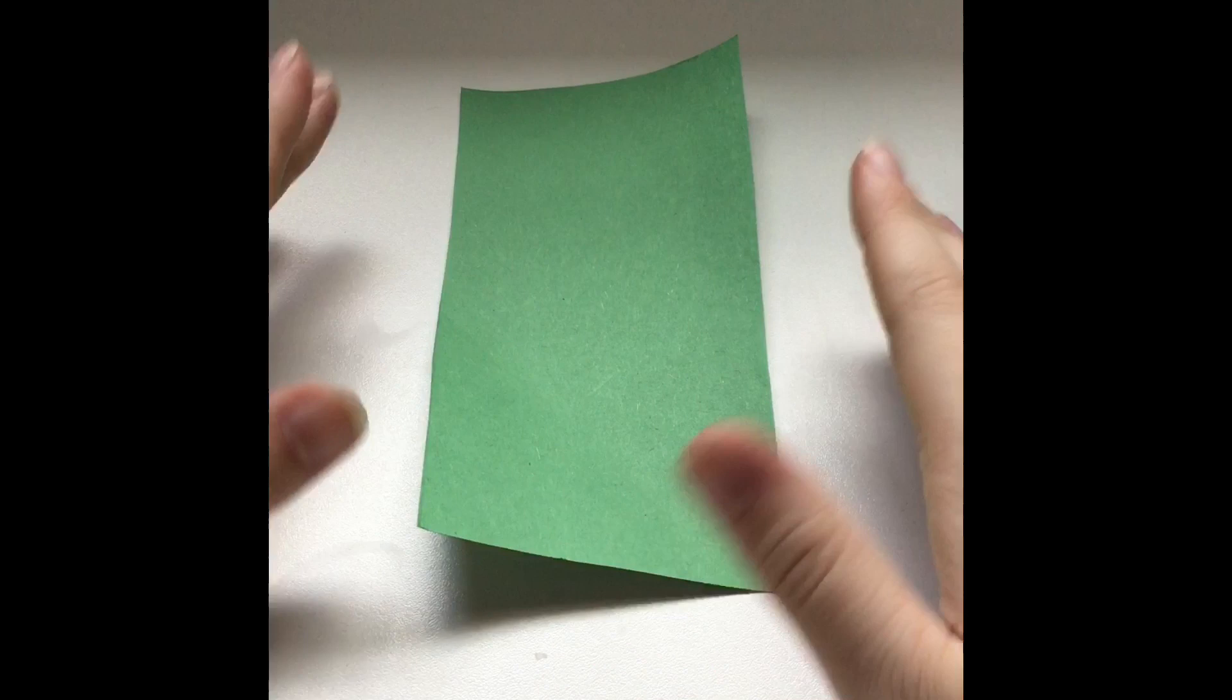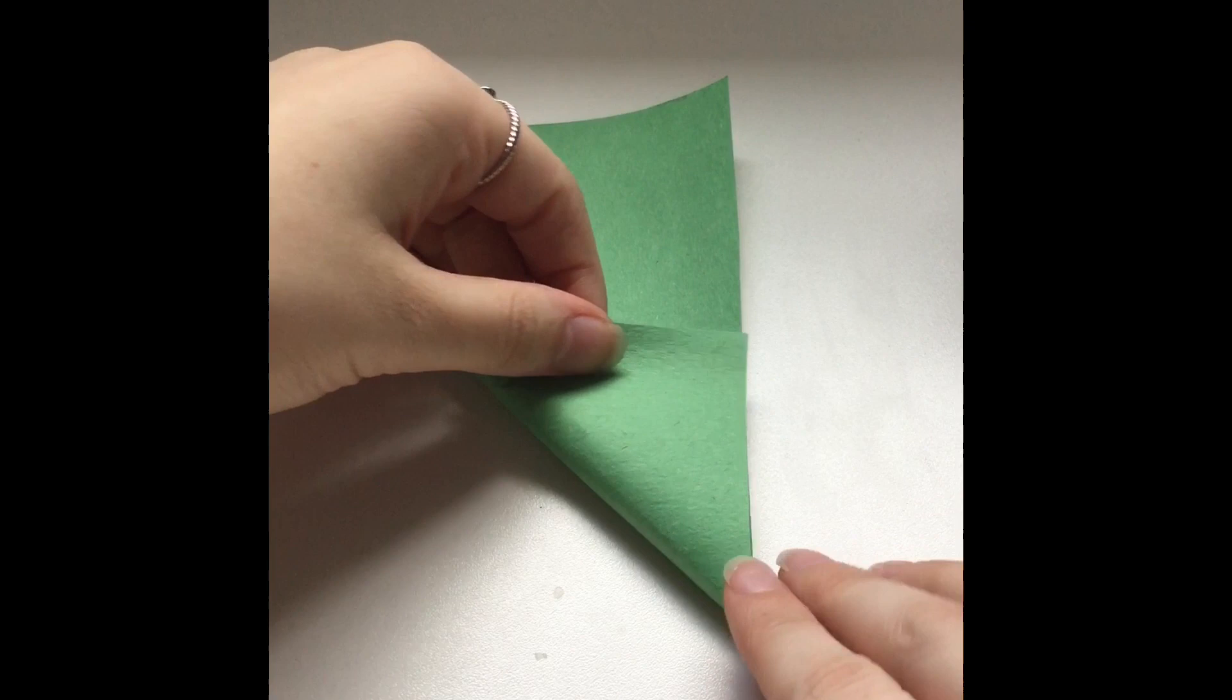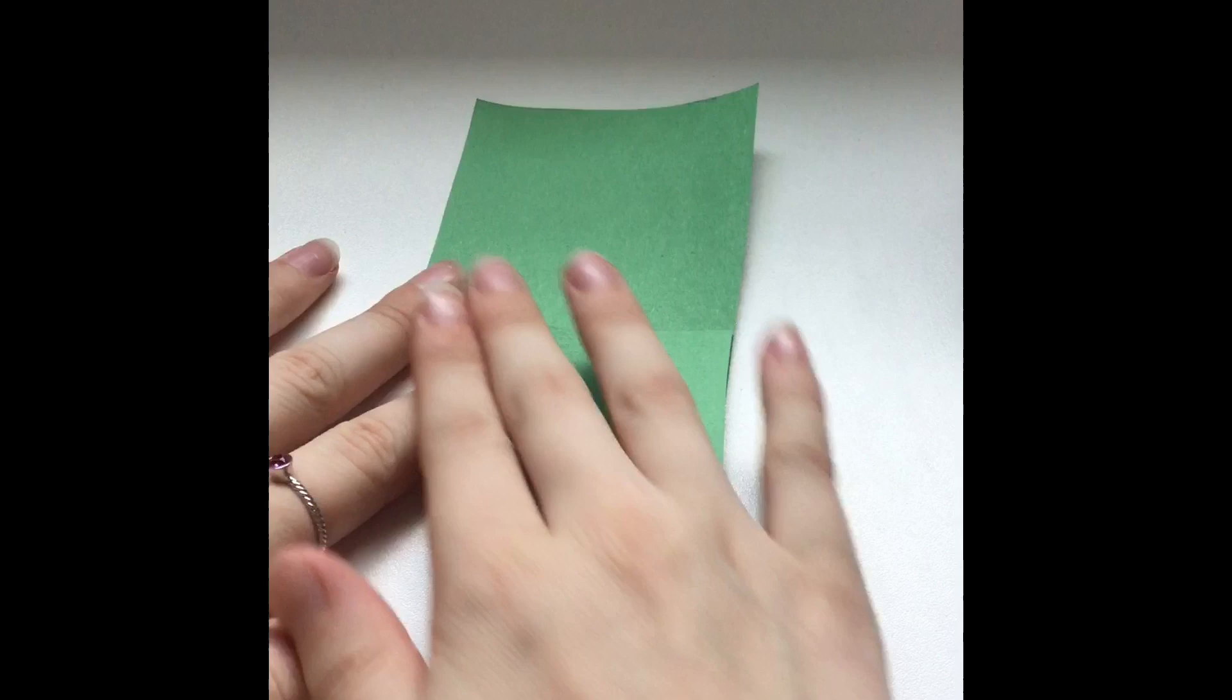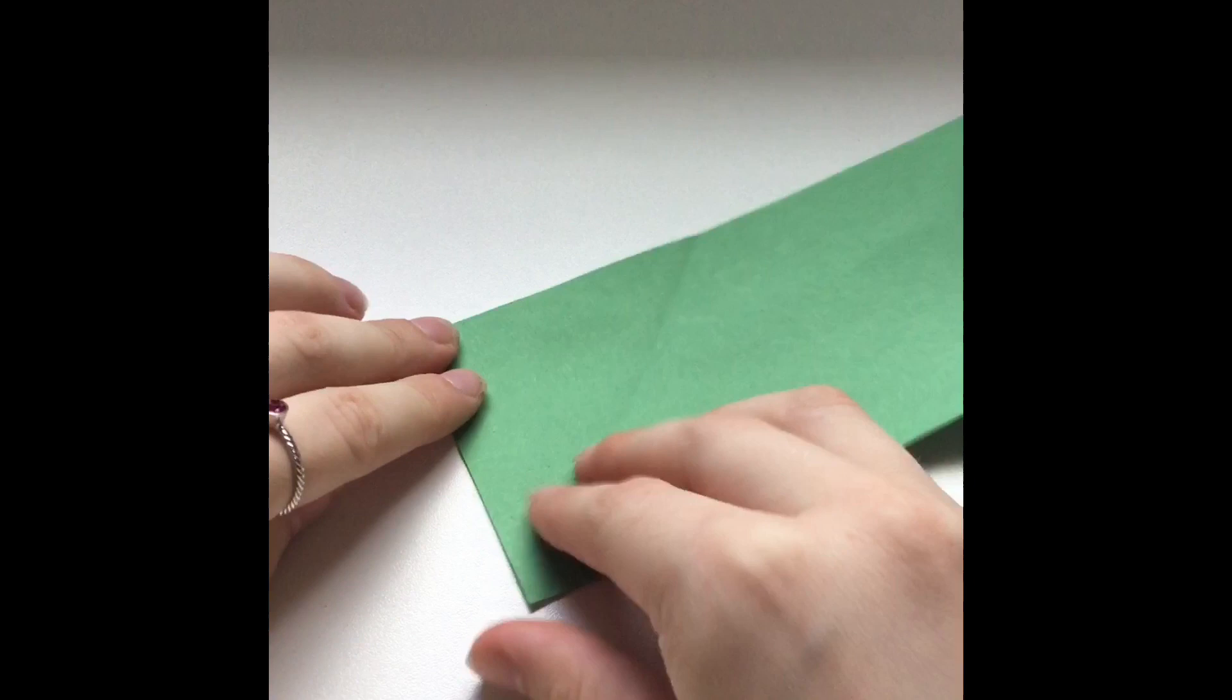So the first step to making these origami frogs is to take a corner and then you are going to fold it over so these corners line up and fold it in half like this. And then you are going to press it down and then unfold it and then do the same on the other side.